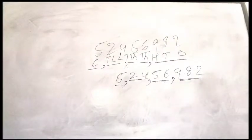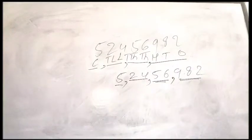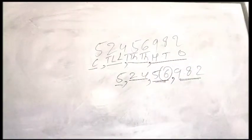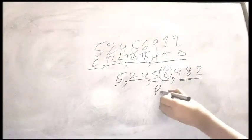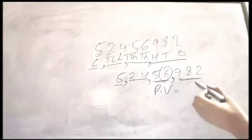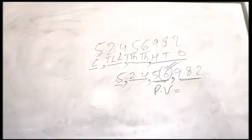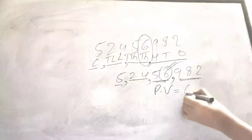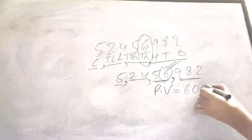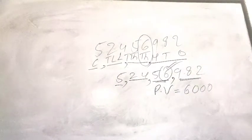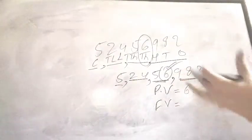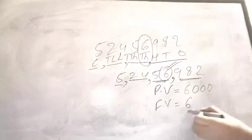Now if I talk about place value and face value — it is a very easy topic, so I will cover it here. If I talk about 6, what is the place value of 6? The place value is actually the place where it is written. Since 6 is written at the thousandths place, the place value is 6000. The face value is the number itself, so the face value of 6 is simply 6.